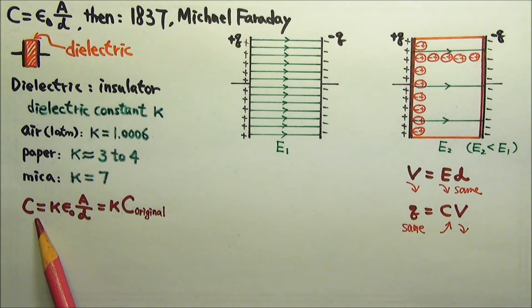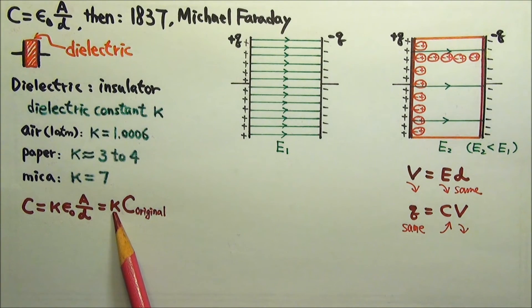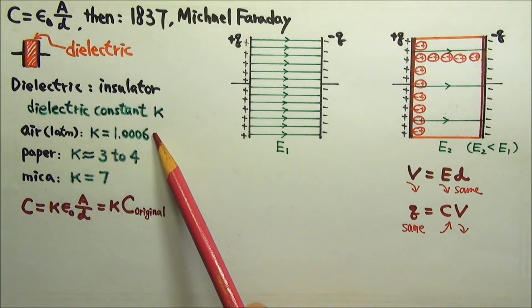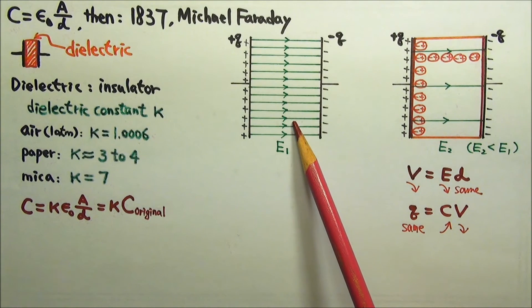With dielectrics, C equals to kappa times epsilon naught A over D, or kappa times the original capacitance, which means the vacuum's kappa is one. Since air's kappa is just about one, air-filled gap is almost the same as vacuum gap.